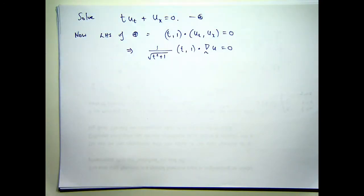What this says is that, basically, the directional derivative of the solution U, to star, in the direction of the vector T comma 1, is 0.